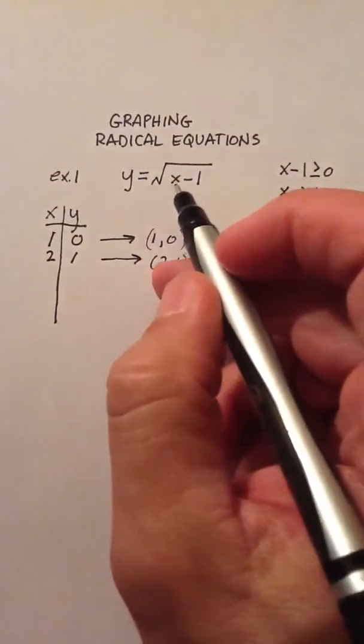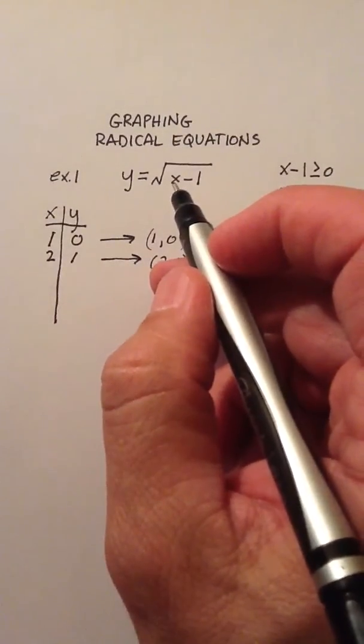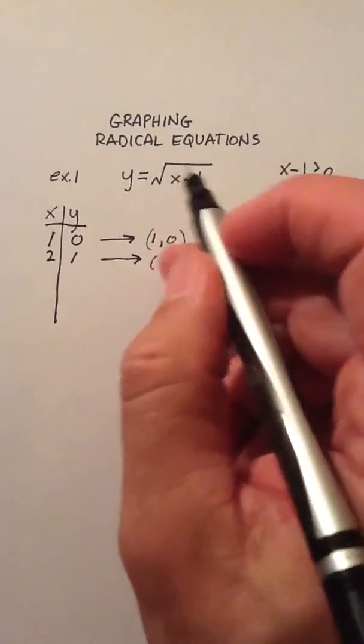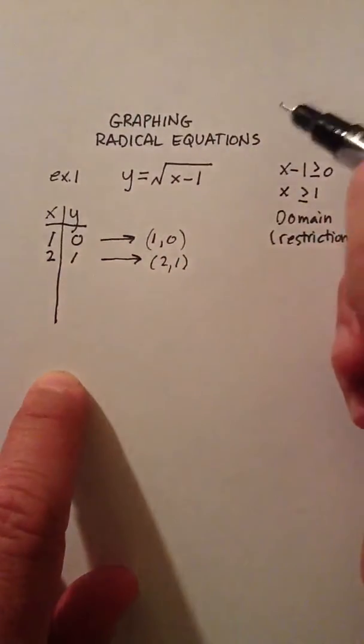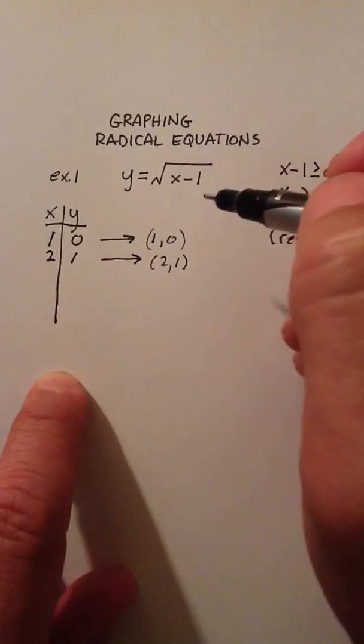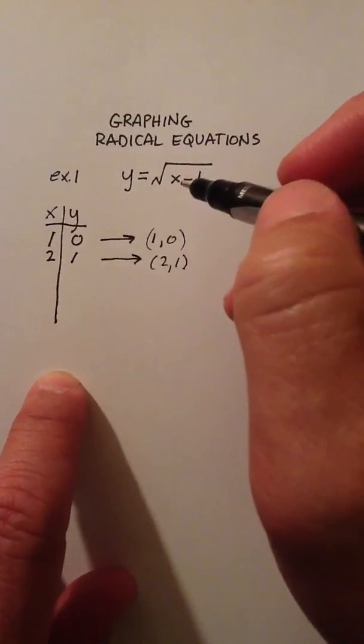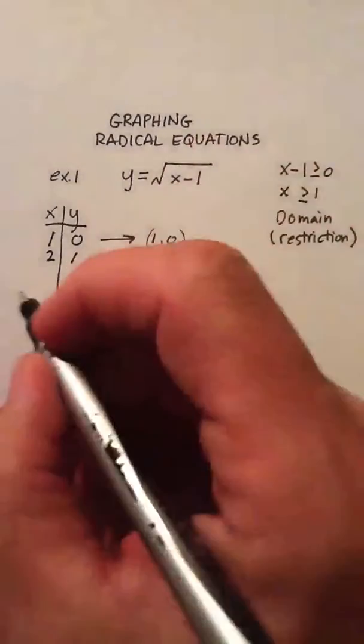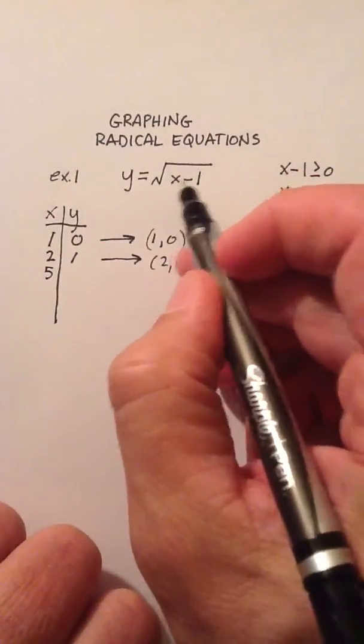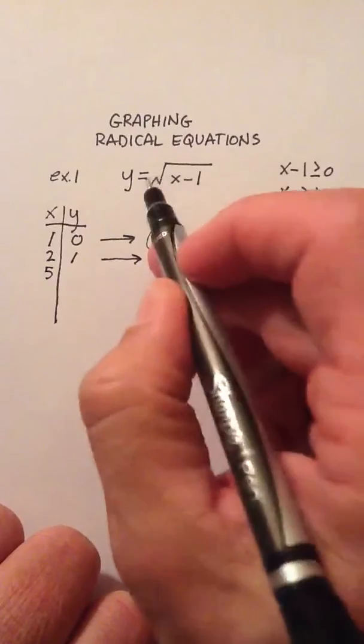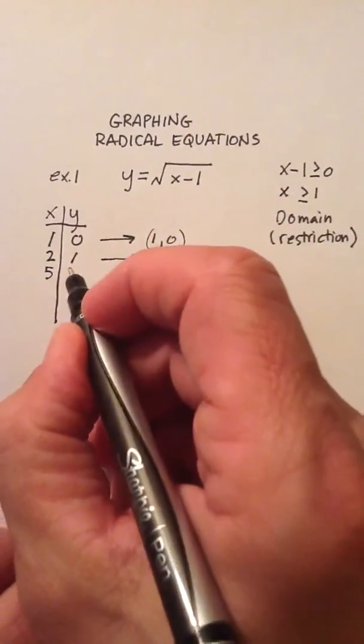Now, I'm not going to choose 3, and only because of the square root, I'll get 3 minus 1, the square root of 2. And then that's a little bit awkward. I want to choose a number that maybe works out a little bit even, a little bit better, a little bit easier for me to graph. So, I'm going to choose 5. And watch what happens when I choose 5. So, 5 minus 1 is 4. And the square root of 4 is 2.